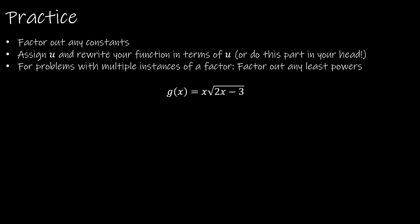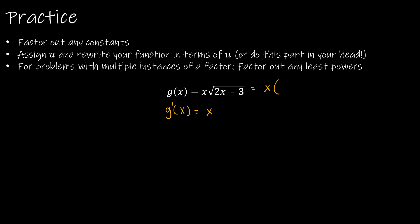Let's do another practice. We have no constants to factor out here. This function involves two different functions of x, so I have to use the product rule. I'm going to rewrite this as x times (2x minus 3) to the one half.